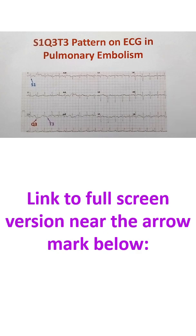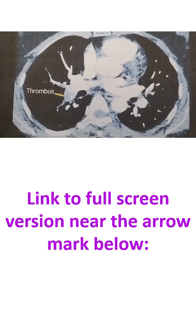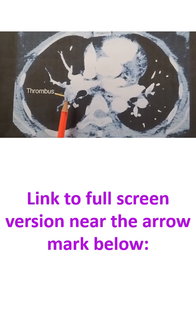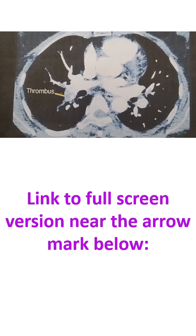This is a contrast-enhanced CT thorax showing thrombus in the pulmonary artery as a negative shadow. Even if you see typical clinical features of pulmonary embolism and ECG changes, thrombus need not be extensive by the time the CT is taken. Sometimes the thrombus may have partially dissolved and migrated peripherally, with only small vessels involved.